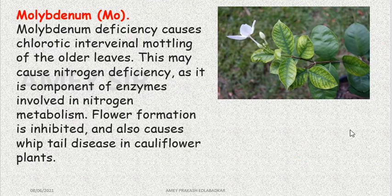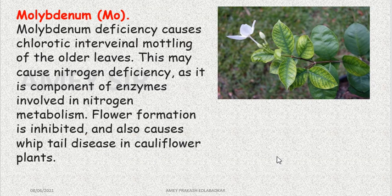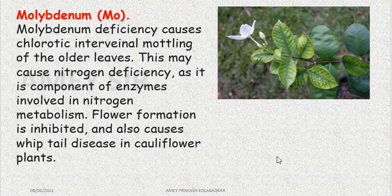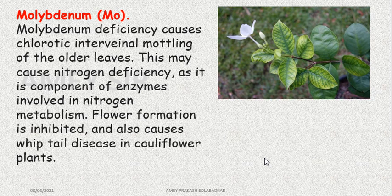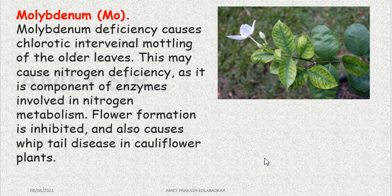Another important element is molybdenum. Molybdenum deficiency also leads to chlorotic symptoms, which first appear in older leaves. This also causes nitrogen deficiency because molybdenum is an enzyme component — it is necessary for the metabolism of nitrogenous compounds, working as an activator. Without molybdenum, nitrogen metabolism will be completely hampered, flower formation will not occur, and in cauliflower, the leaves called 'whip tail' will curl up, with other infections also developing.